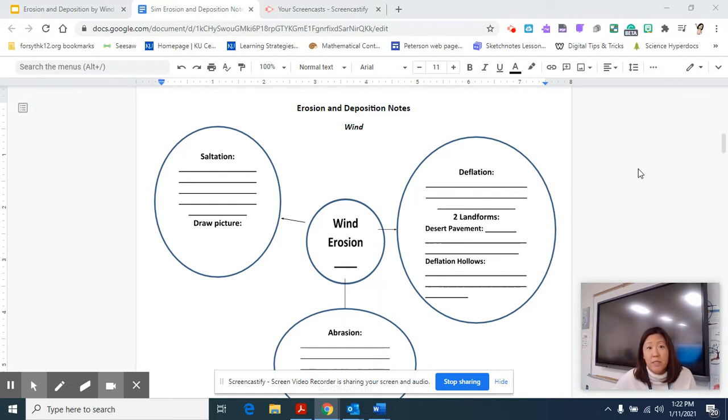So before we actually start with our slides, what I wanted to show you first is the way that the notes, the way I set them up. I tried to make it easier for you to understand so I put it in more of like a concept map. So you can visually see that when we're talking about, for example, wind erosion, it involves these three words: saltation, deflation, and abrasion. All three of these words have to do with wind erosion. Erosion, again, is the idea of sediment that moves from one place to another.